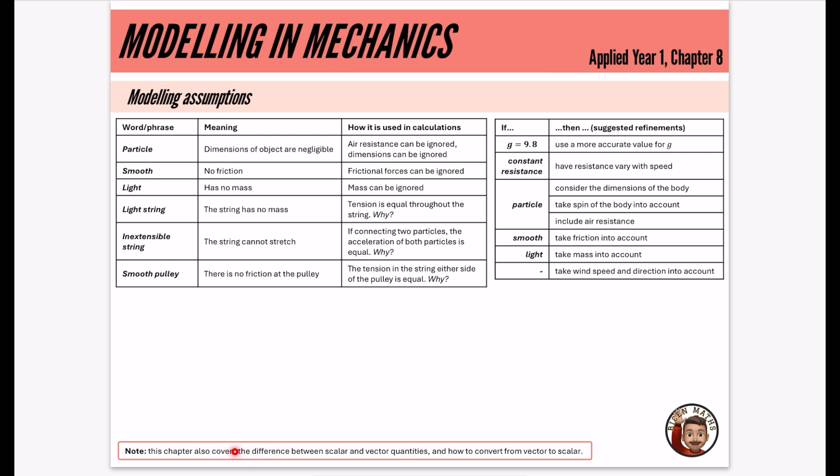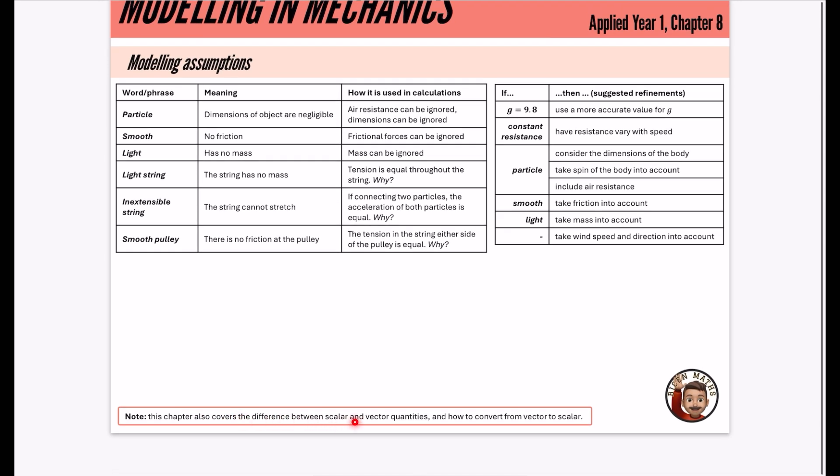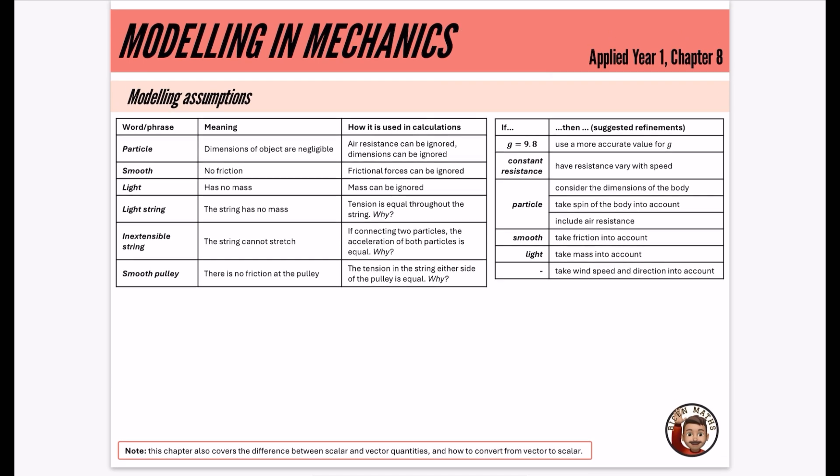And I should mention now that this chapter does also cover the difference between scalar and vector quantities and how to convert from vector to scalar. I'm not going to cover that in this summary because if you're using chapter summaries right now, I know that you already know how to do those things and it comes up again in the later chapters so it gets covered again.